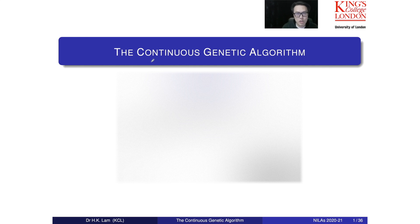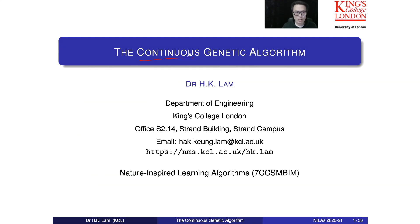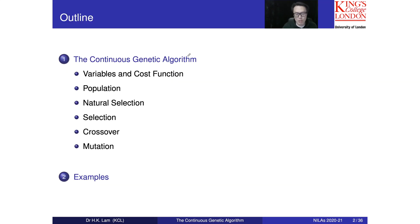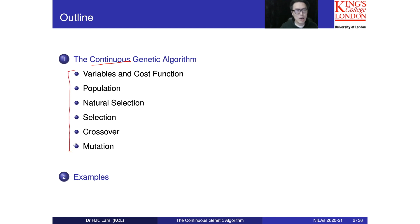Now I'm going to talk about the continuous genetic algorithm. This is the extended version of the binary genetic algorithm. Today we focus on the continuous version and are going to give all the details about how to implement the basic continuous genetic algorithm. I have to emphasize that this is the very basic version of the continuous genetic algorithm.